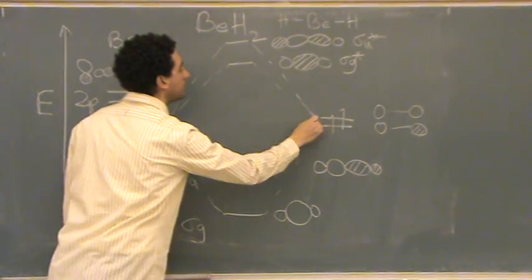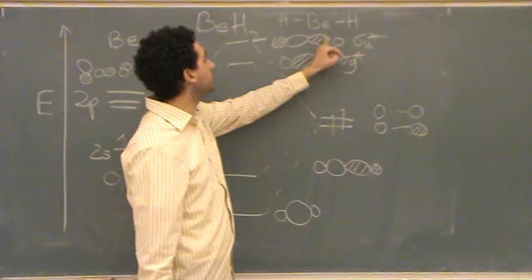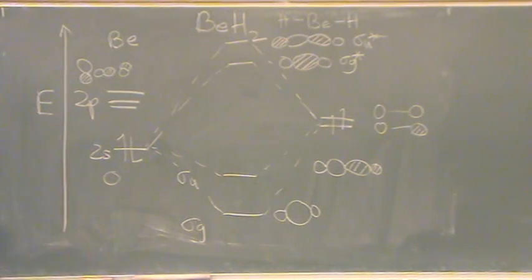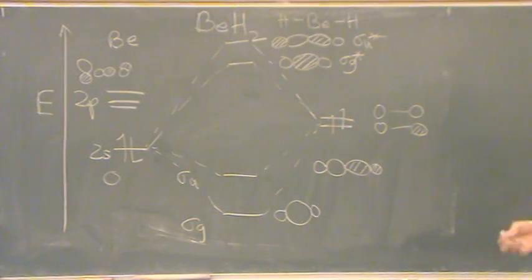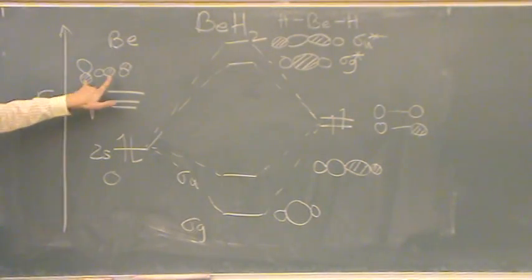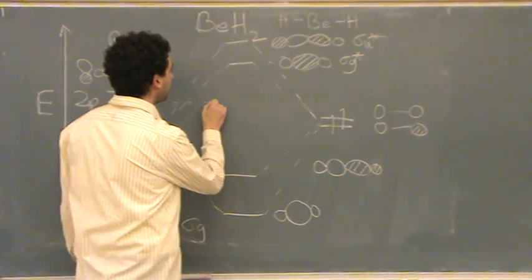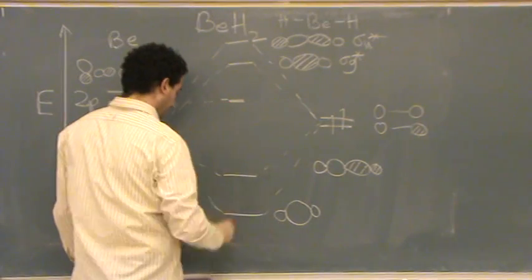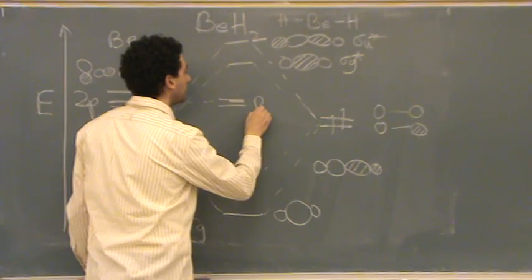You might wonder why I drew the sigma-U star so high in energy — well, this orbital is going to have three nodes: one, two, three. So you place the energy level according to the number of nodes if you know nothing else. Now, if you're paying attention, there are two P orbitals I didn't get to use — those are orthogonal to the hydrogens, so they come out non-bonding. I'll draw two lines in the middle for those.